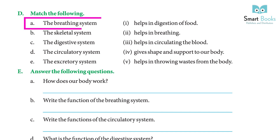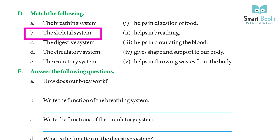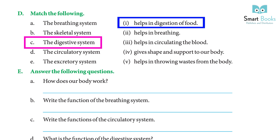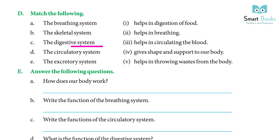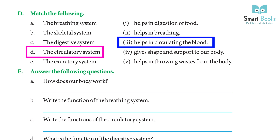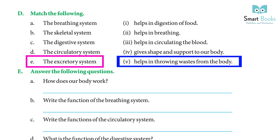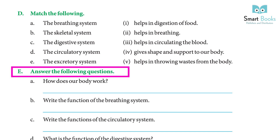Exercise D — Match the following: (a) The breathing system — helps in breathing. (b) The skeletal system — gives shape and support to the body. (c) The digestive system — helps in digestion of food. (d) The circulatory system — helps in circulating the blood. (e) The excretory system — helps in throwing waste from the body.